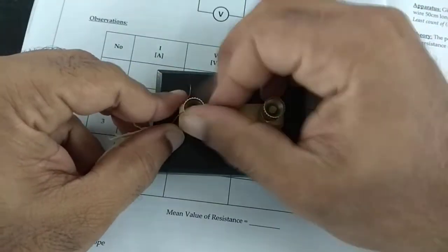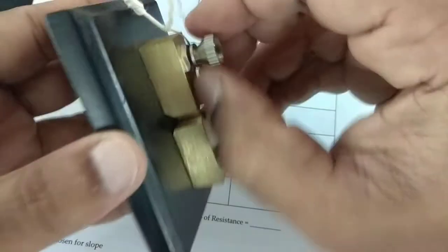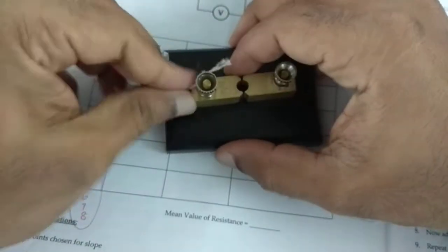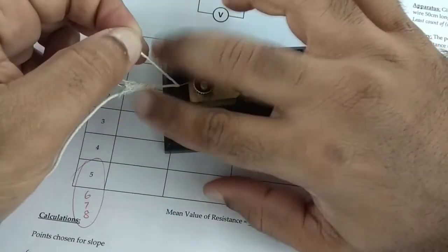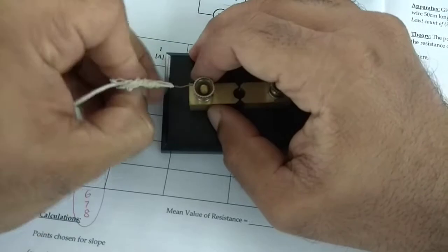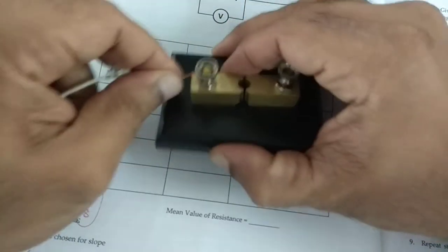If that connection is loose, you're going to have trouble with your readings. Sometimes if you cannot do it with your hand, you can use pliers. You can ask Ishuri Akka for pliers to get that done. Now this is tight.